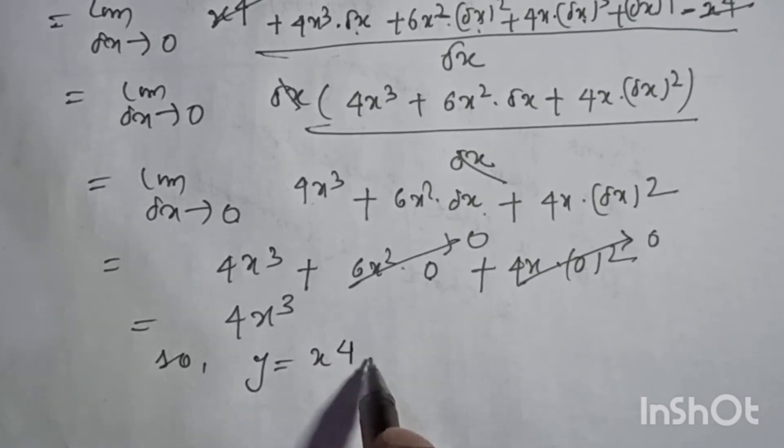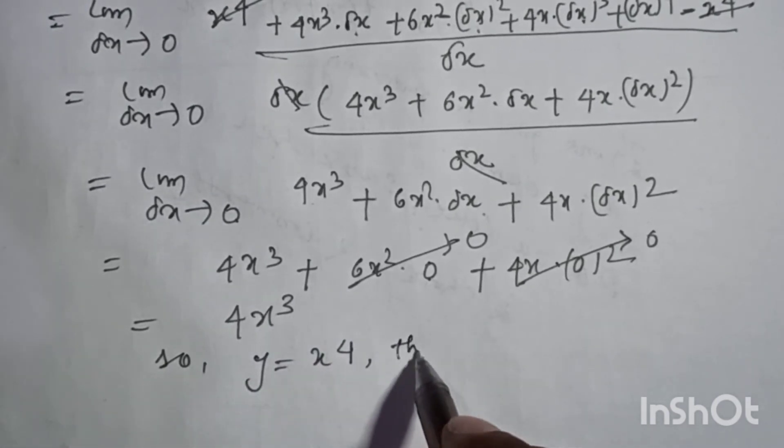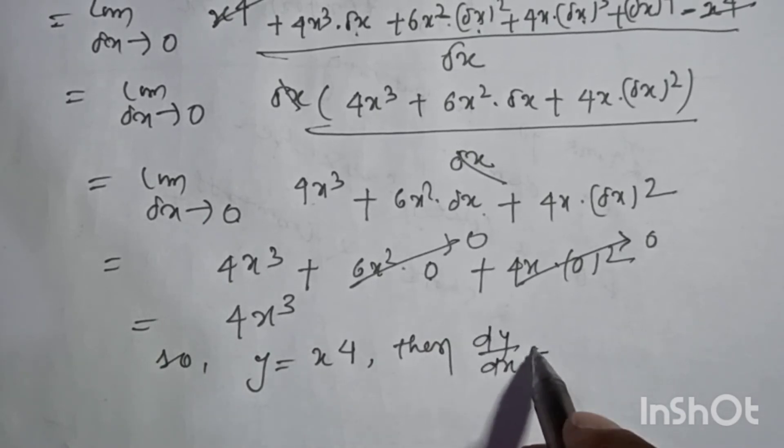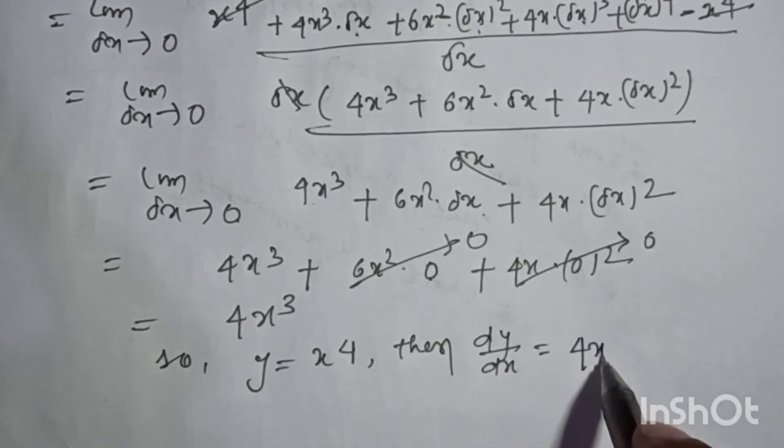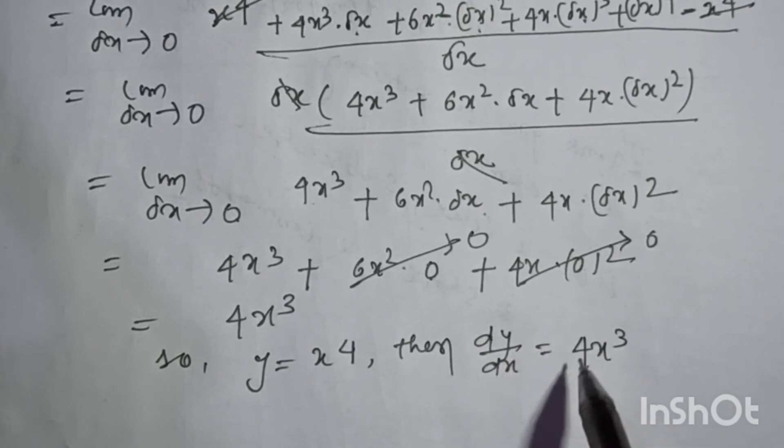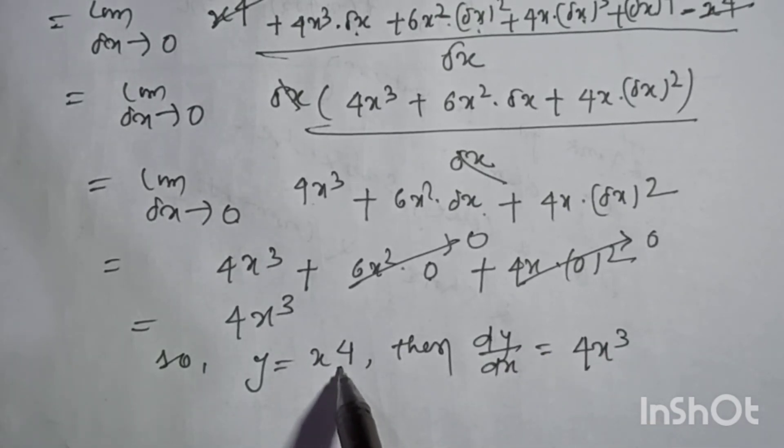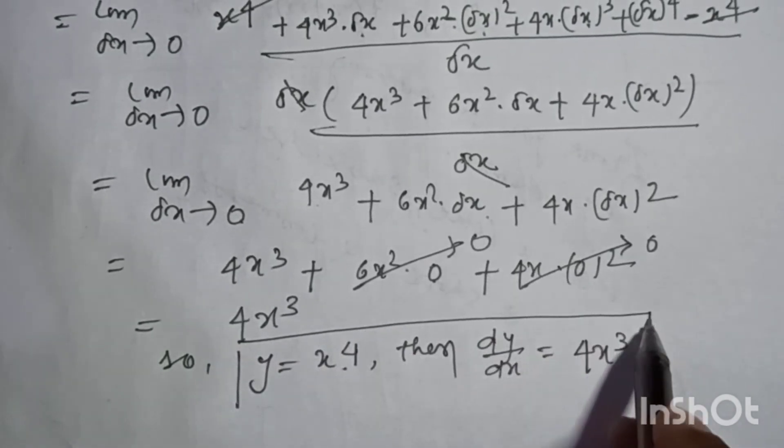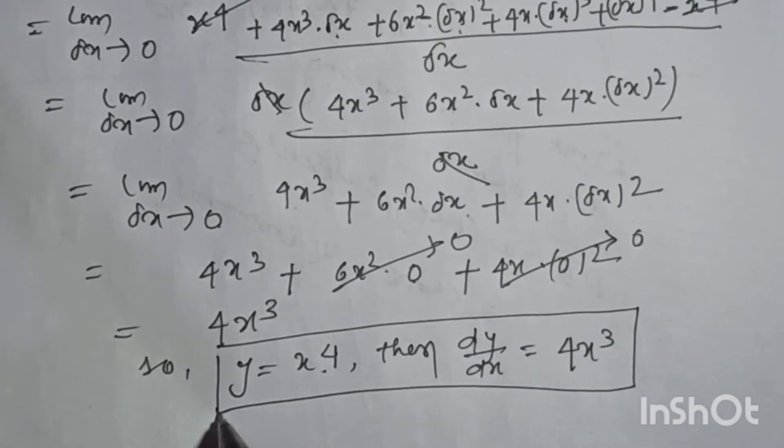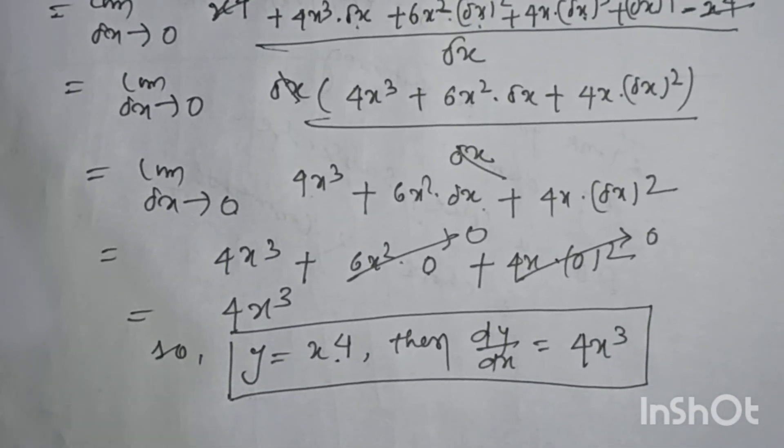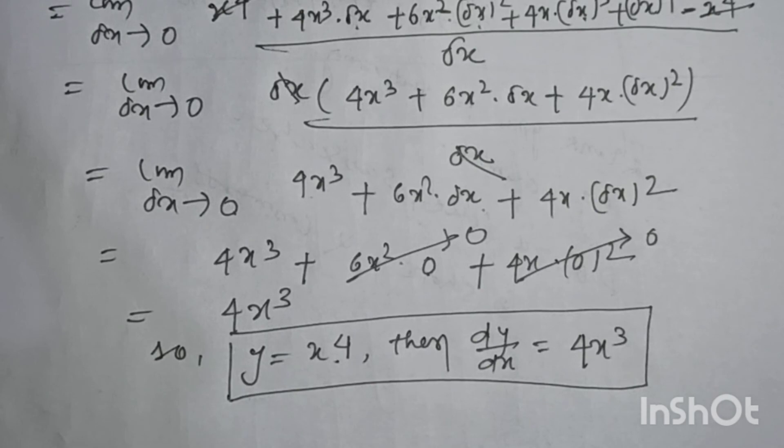So if y is equal to x to the power 4, then dy by dx is equal to 4 x cube. This is the result. Thank you for watching my channel. Do like, subscribe, share and comment. Thank you.